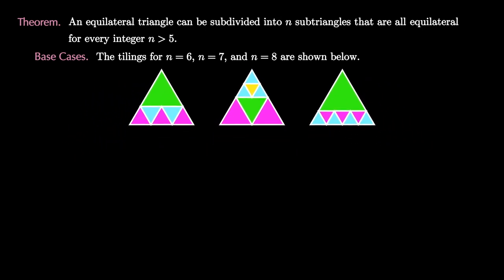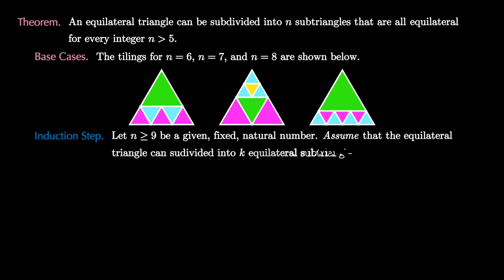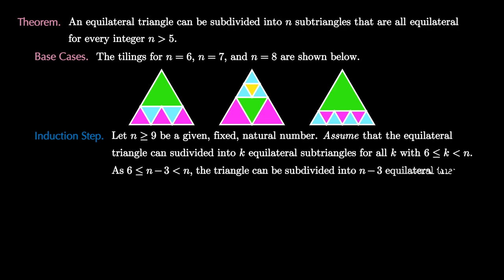For the induction step, we first let n be a fixed natural number greater than or equal to 9. Now we assume that the equilateral triangle can be subdivided into k equilateral sub-triangles for every value of k with 6 ≤ k < n. Because 6 ≤ n - 3 < n, the triangle can be subdivided into n - 3 equilateral triangles by assumption.